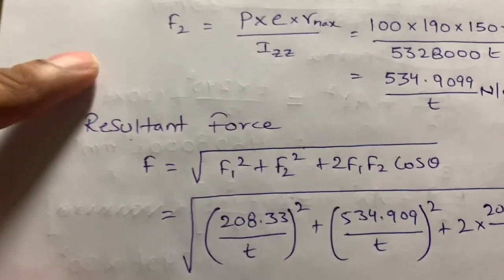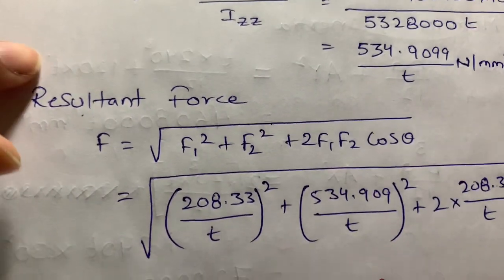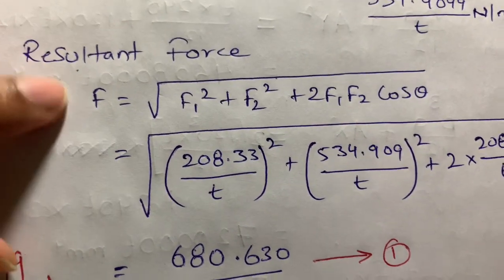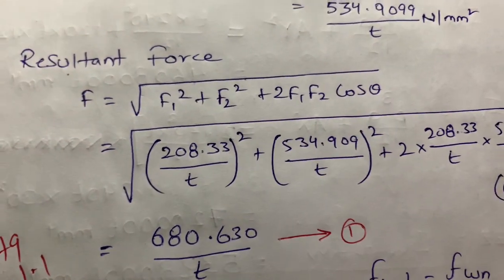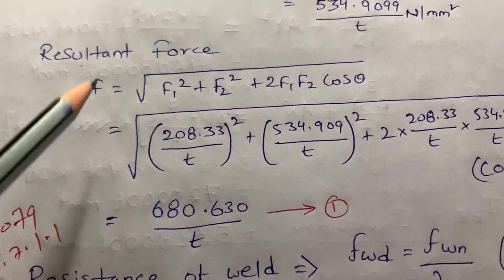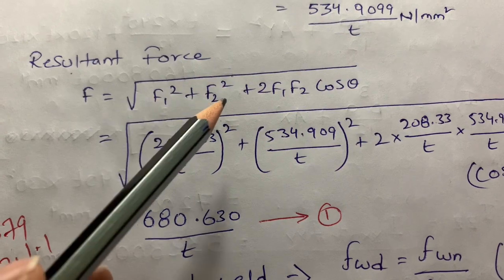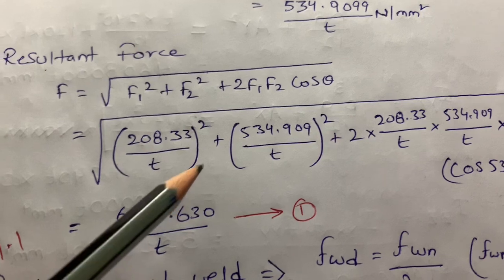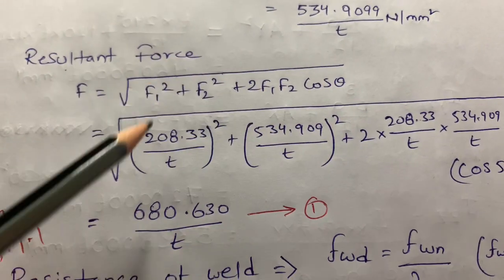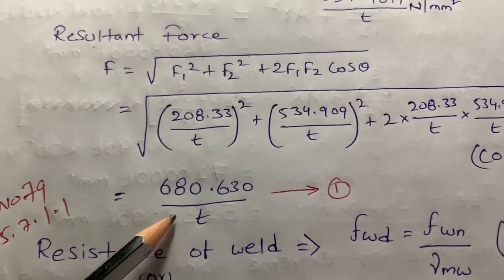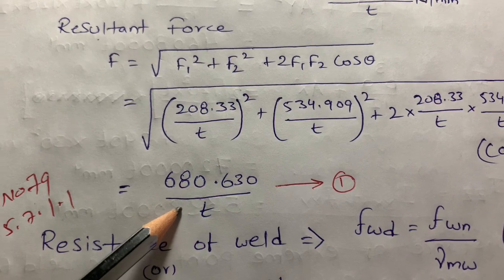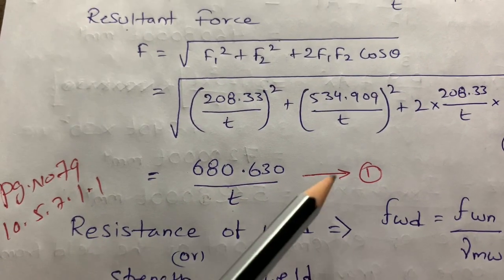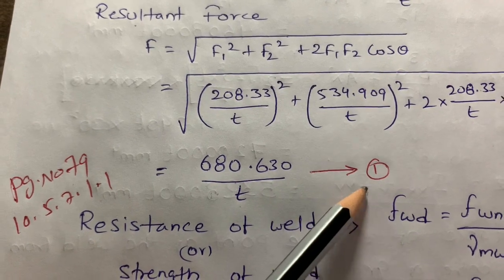By calculating these two forces F1 and F2, I am going to calculate the resultant force. The formula is: F = √(F1² + F2² + 2·F1·F2·cos θ). Substituting all known values — theta, F1, and F2 — after calculating the resultant force, I got the value 680.630/T. I consider this as Equation 1.